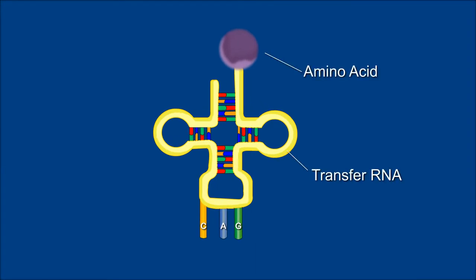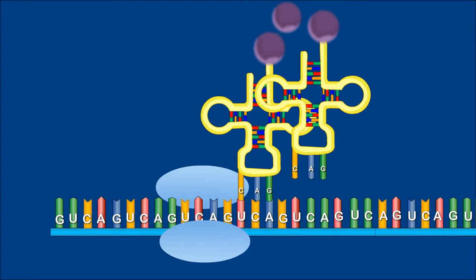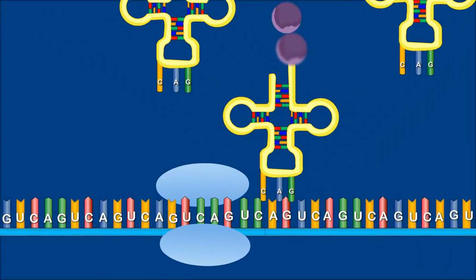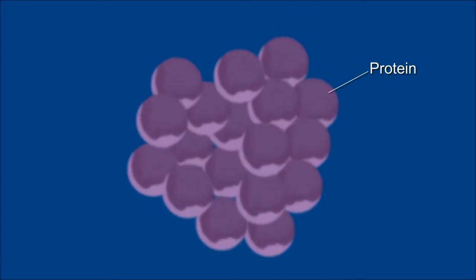This process is called translation. There are 20 different kinds of amino acids, which are the building blocks of proteins, just like A, T, C, G are building blocks of DNA. Once the translation of the gene is complete, the amino acid chain folds to form the 2D or 3D protein structure.